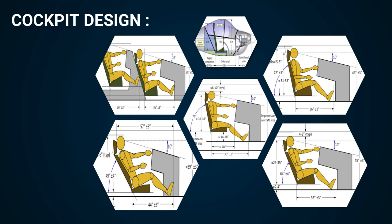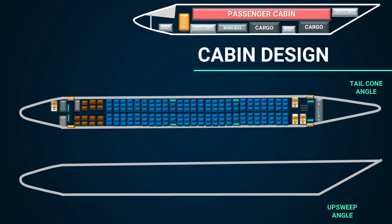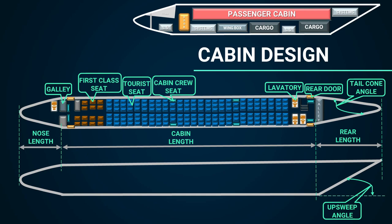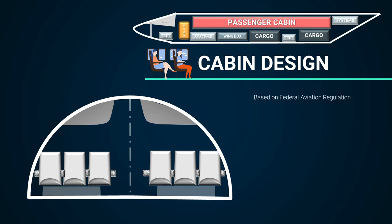Moving to cabin design: for a passenger aircraft, the cabin design consists of passenger arrangements in various configurations, starting with a galley, first class seats, tourist seats, cabin crew seats, lavatory, doors, front door, and rear door. Based on federal aviation regulations, the cabin design must satisfy requirements for seat width, aisle width, aisle height, headroom, and seat pitch.